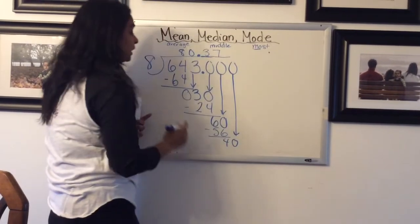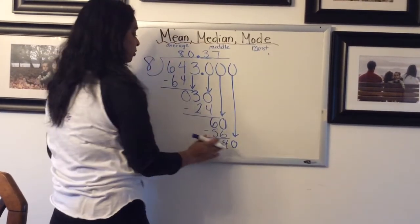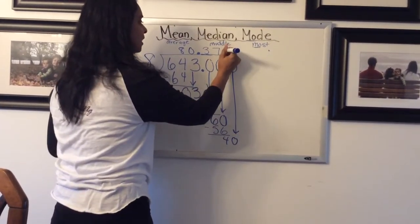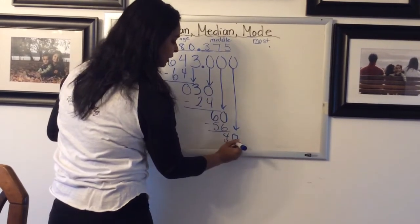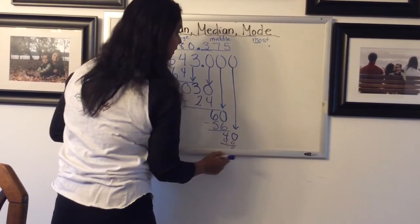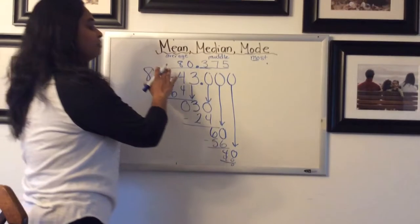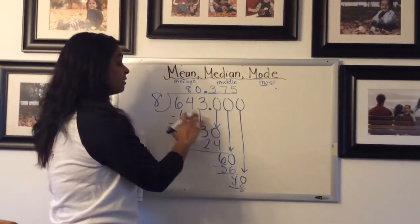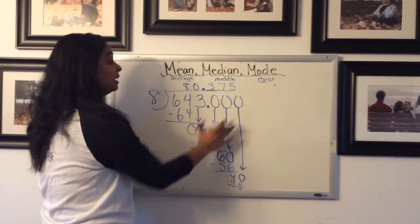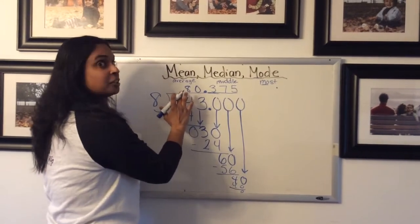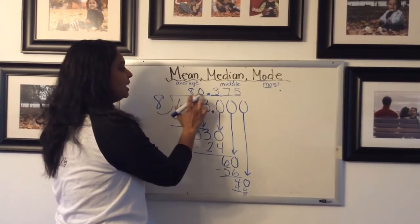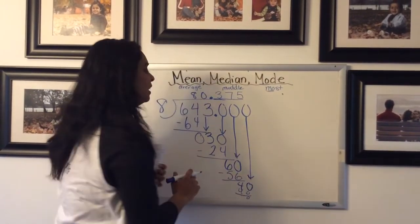So we're going to add another zero here. And that's going to become 40. And now this looks a little bit hopeful. 40 divided by 8, that's 5. And I finally got my remainder of zero. So this is one of the questions you're going to have to find the mean for. You're going to have to do the division for. And so the answer, the mean for this question is 80.375.